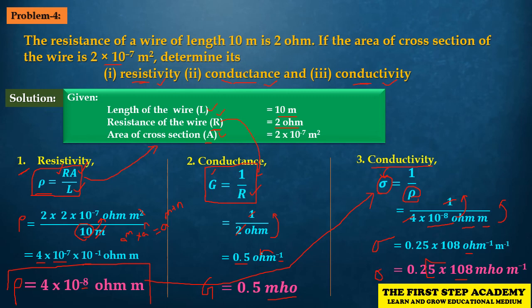So the conductivity value is σ = 0.25×10⁸ mho metre⁻¹. That completes the solution to problem 4. Hope you understand. Thanks for watching — this is First Step Academy.